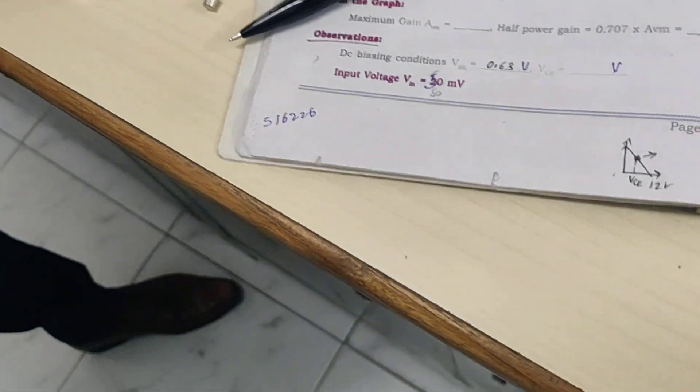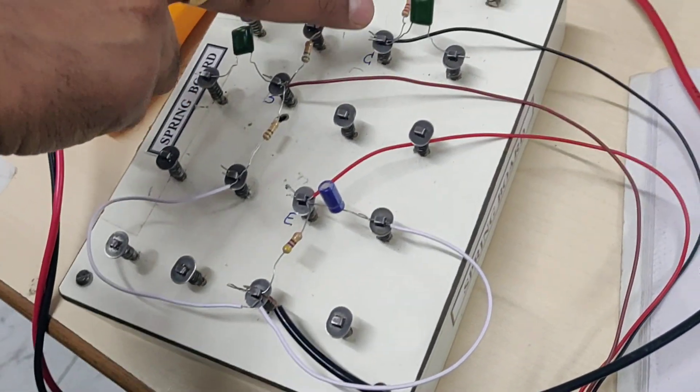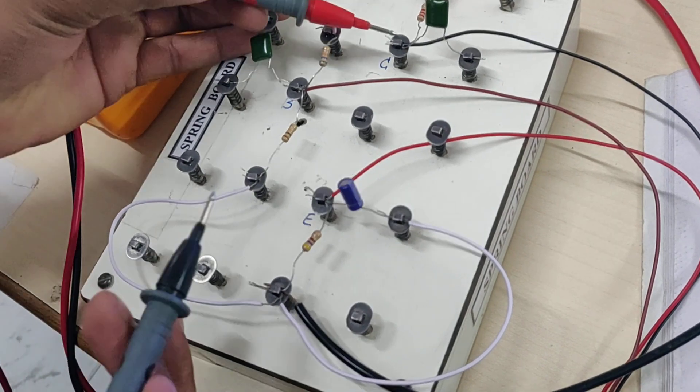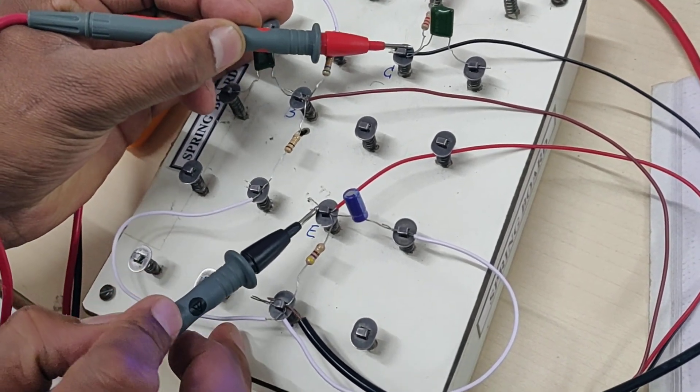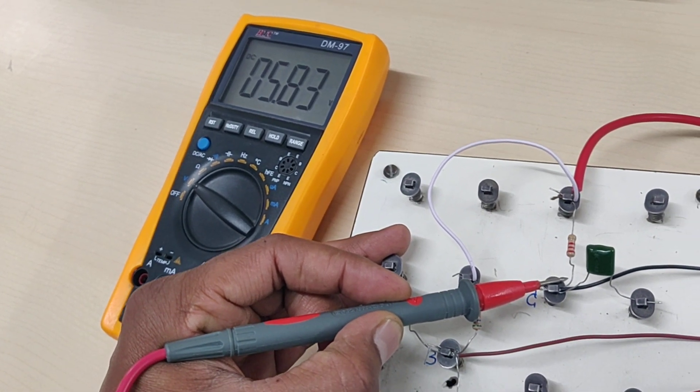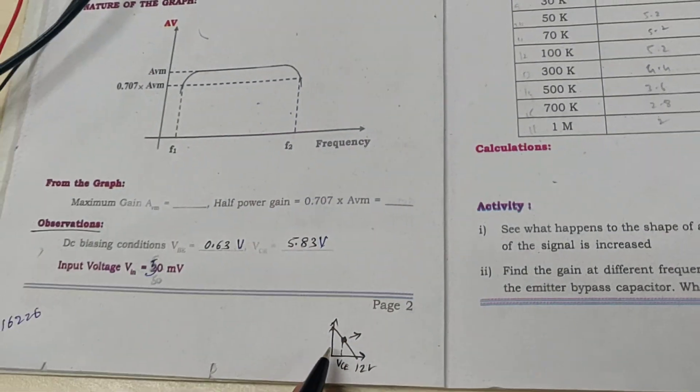Now we shall measure VCE. VCE means I should measure between C and E terminals. Positive should go to C, negative to E. We are getting 5.83 or 5.84 volts. Let me note this down. It is 5.83.